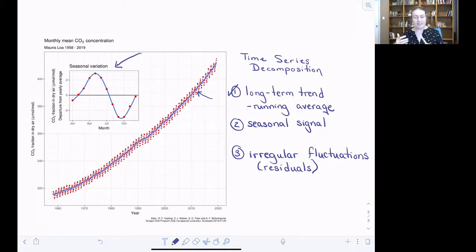And now our next step is to extract that long-term trend so that we can focus on the other two levels of data, which are the seasonal signal and the irregular fluctuations. So how do we do that part?